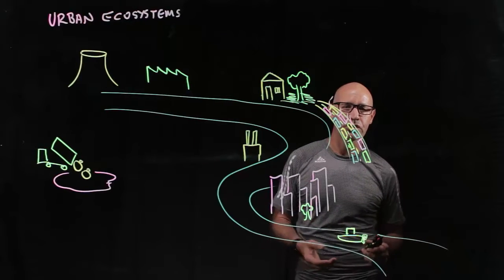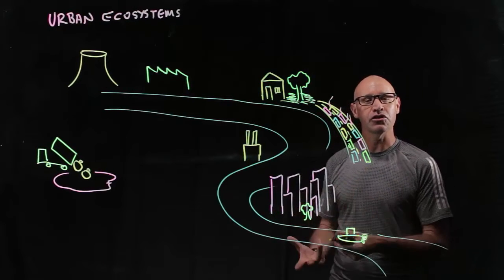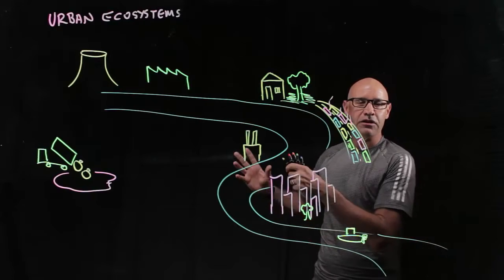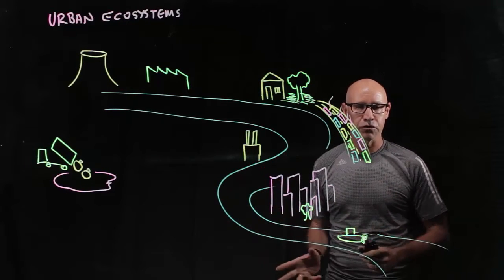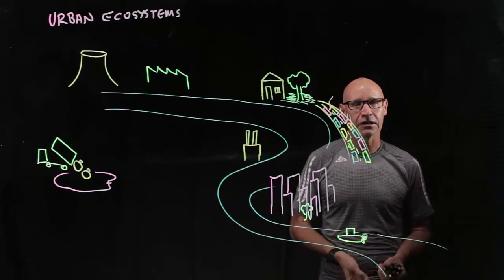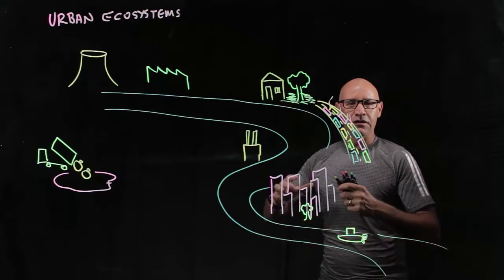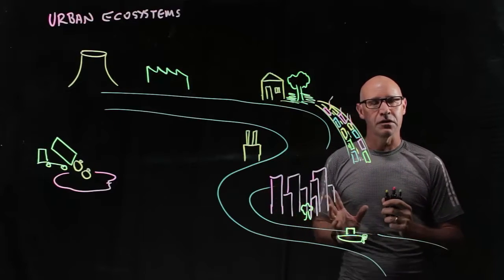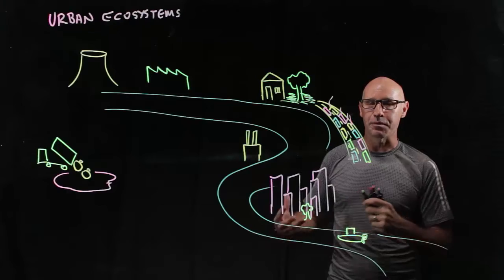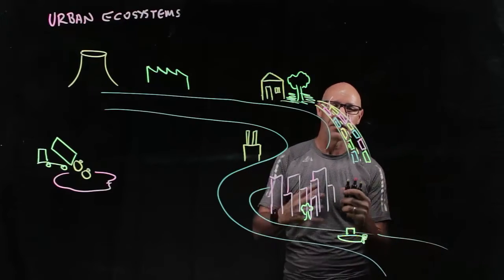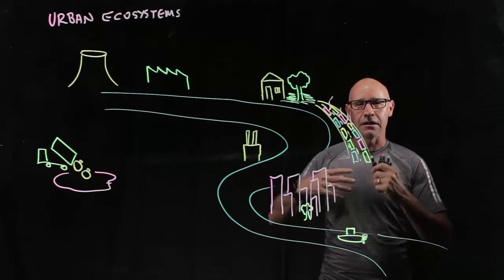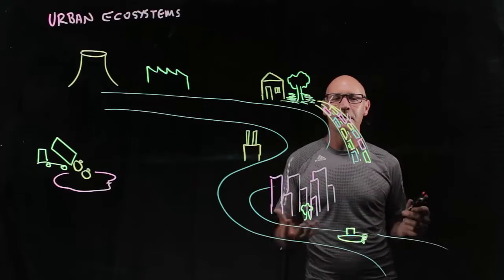Since the Industrial Revolution, and now with the Technological Revolution, there's a trend for people to move away from rural areas into towns and cities. And so we're now interacting with animals and plants that live also in these environments, and we produce this thing called an urban ecosystem.